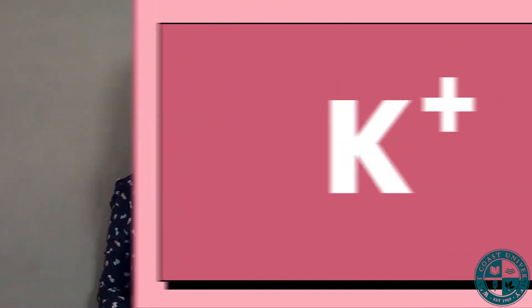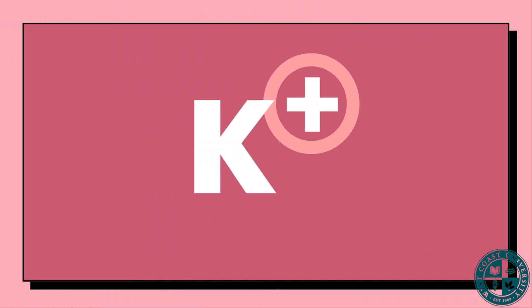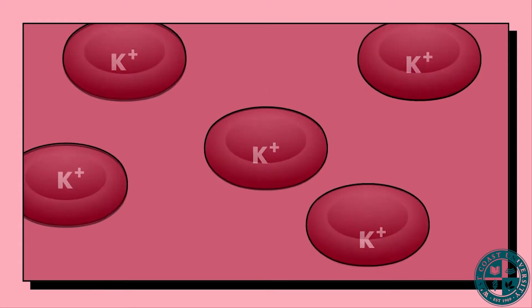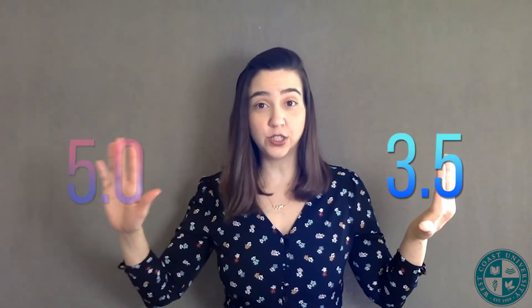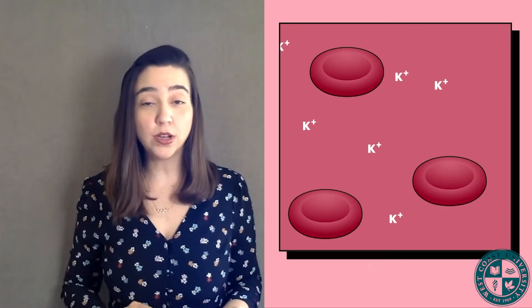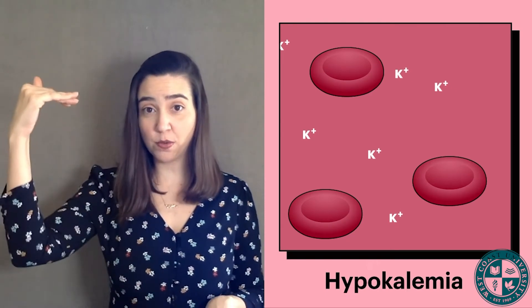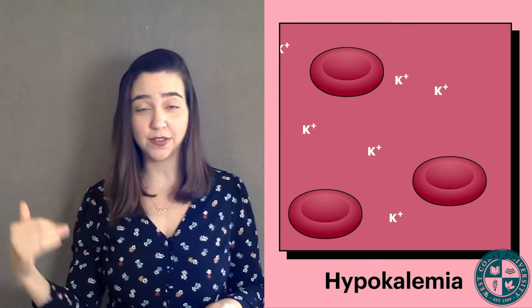Next, we're going to discuss potassium. Potassium is a major cation in the intracellular fluid. A normal potassium level is from 3.5 to 5.0 milliequivalents per liter. Hypokalemia is a potassium level below 3.5.